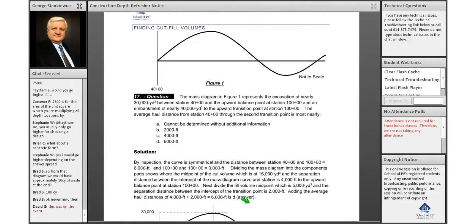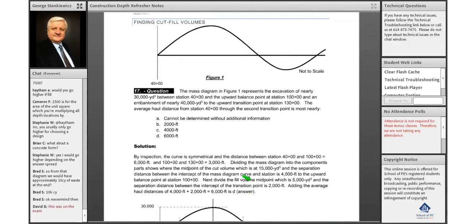All right, let's take a look at this one here. Finding cut and fill volumes. We're given that squiggly line and we're asked to find what is the average haul distance from station 40 through the second transition point. So we're looking at a mass haul diagram.